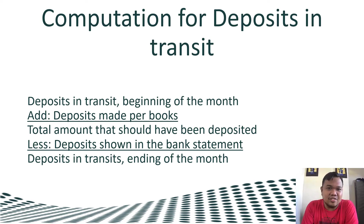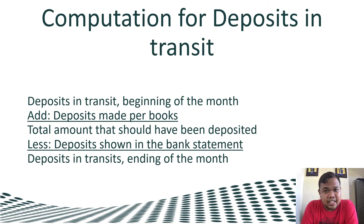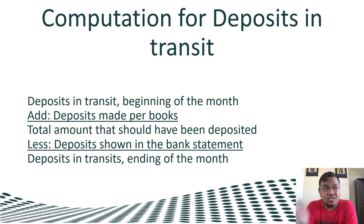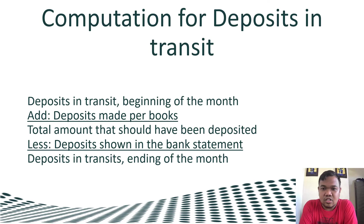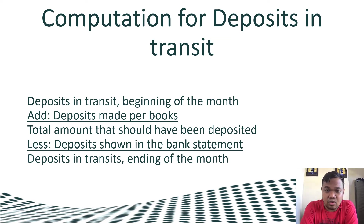If the deposit in transit amount is not given in the problem, we can compute it using this formula: Deposit in transit at the beginning of the month, plus deposits made per book, less the deposits shown in the bank statement — and this will give us the deposit in transit at the end of the month.